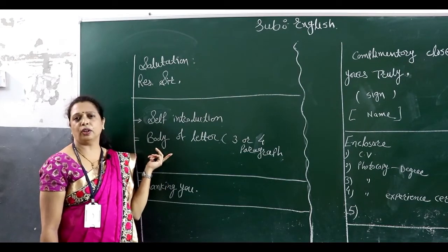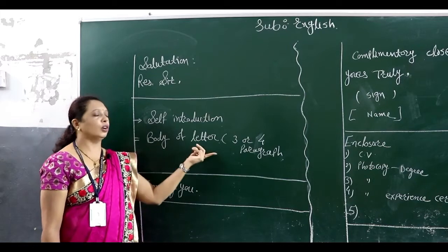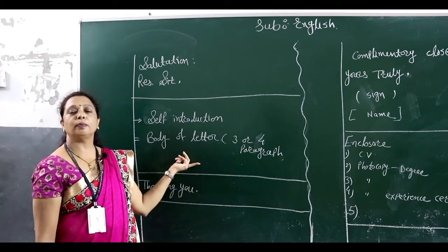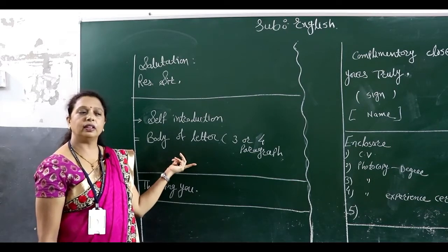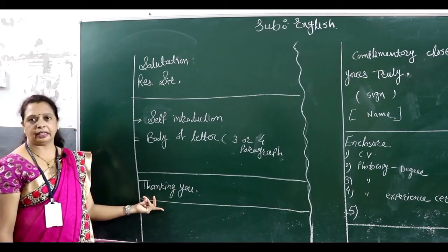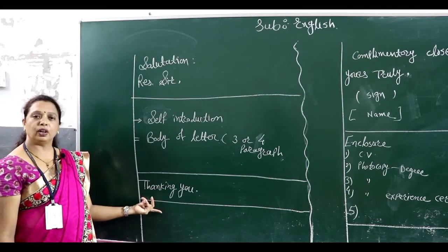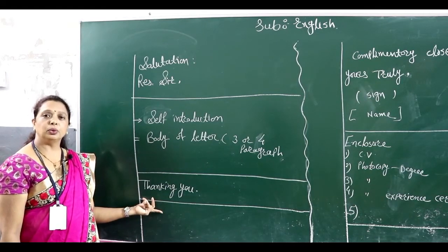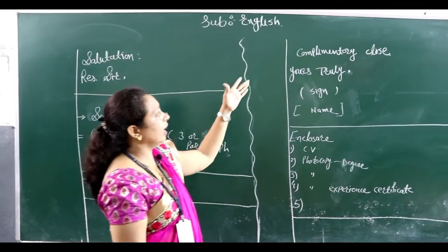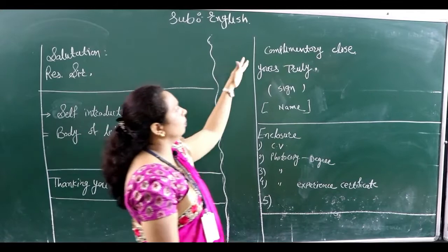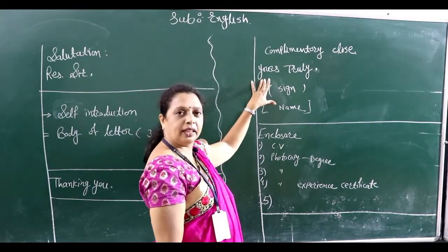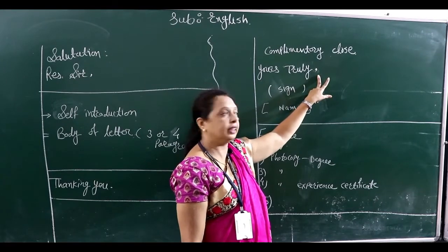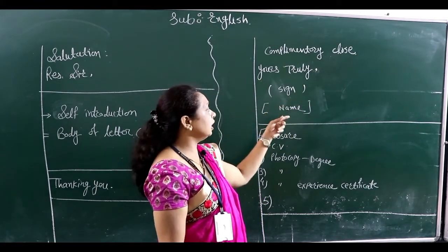After the self-introduction, write the motive — why you are writing this letter — as the body of the letter, having three or four paragraphs on the topic, using only proper formal wording. The letter ends with 'Thanking you' — without that your formal letter cannot be completed. After leaving one line, write the complimentary close: 'Yours truly,' followed by a comma. After that, give your signature and mention your name properly.